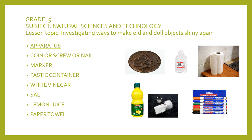The focus of our lesson will be based on Grade 5, the subject of Natural Science and Technology. The lesson topic is: we are going to investigate ways to make old and dull objects shiny again. We will need apparatus such as a coin, marker, plastic container, white vinegar, salt, lemon juice, and paper towel.